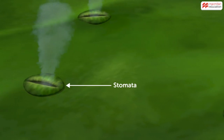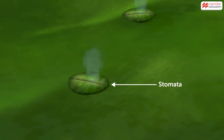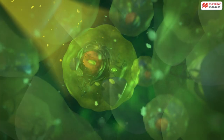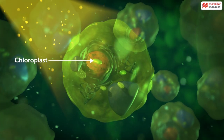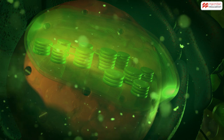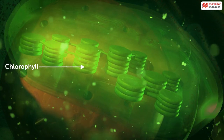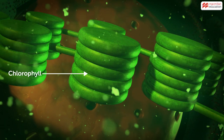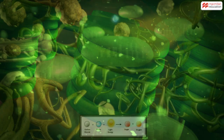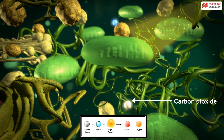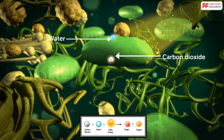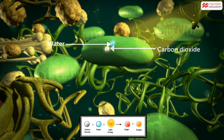The carbon dioxide required is obtained from the air that enters the leaves through small openings called stomata. The places inside the leaves where photosynthesis occurs are called chloroplasts. Chloroplasts contain chlorophyll, the pigment which carries out the process of photosynthesis.